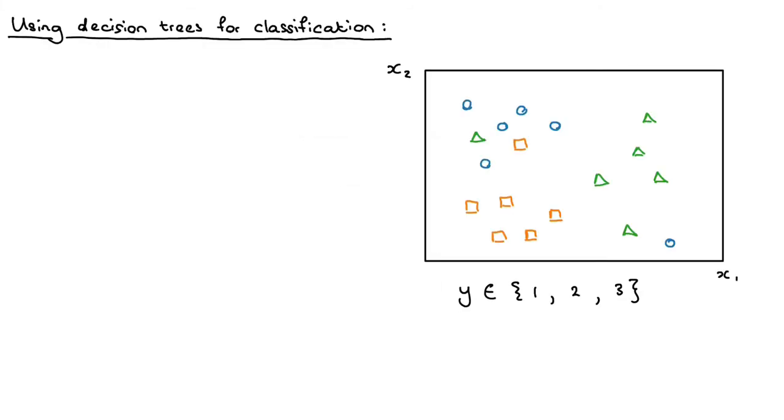So let's say we have a training data set like this one where we have two features x1 and x2, and we've got three classes: the blue circles, the green triangles, and the orange squares.